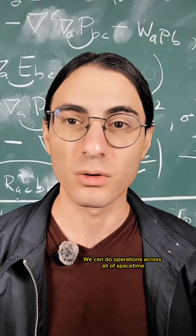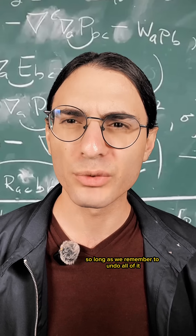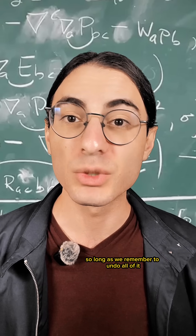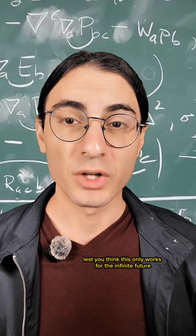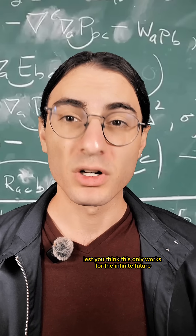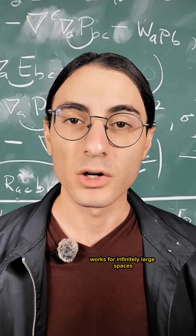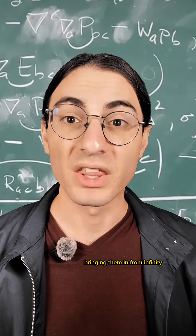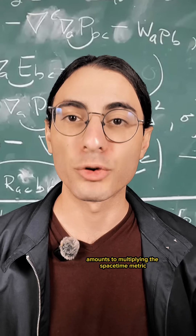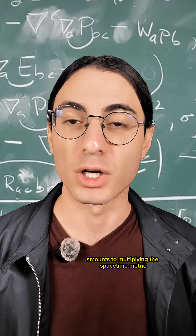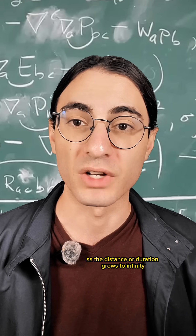We can do operations across all of space-time, including the future infinity, so long as we remember to undo all of it at the end of the computation. And lest you think this only works for the infinite future, a nearly identical mathematical technique works for infinitely large spaces, bringing them in from infinity. Mathematically speaking, this technique amounts to multiplying the space-time metric by a function that goes to zero as the distance or duration grows to infinity.